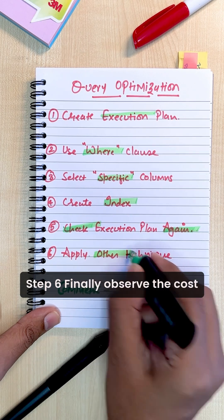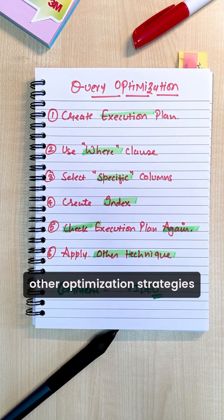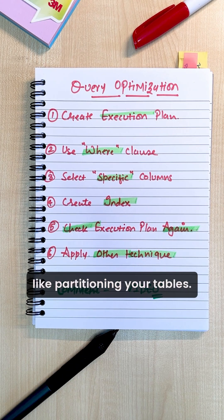Step 6: Finally, observe the cost reduction and explore other optimization strategies like partitioning your tables.